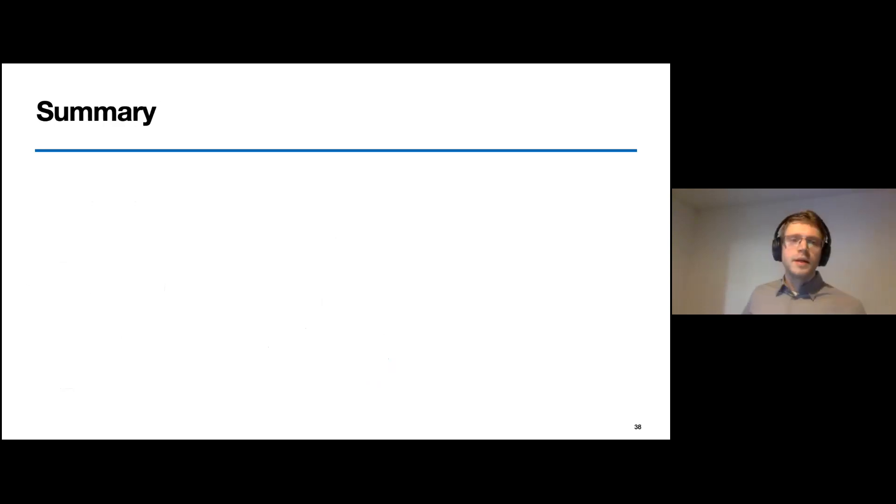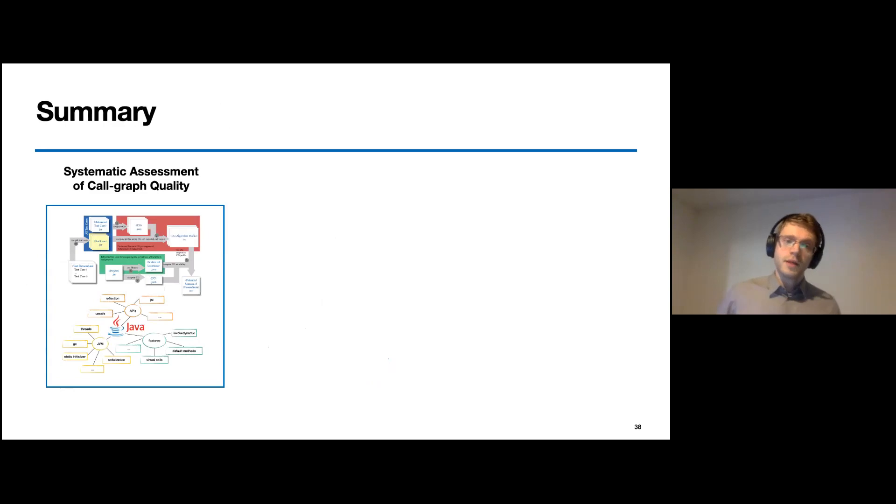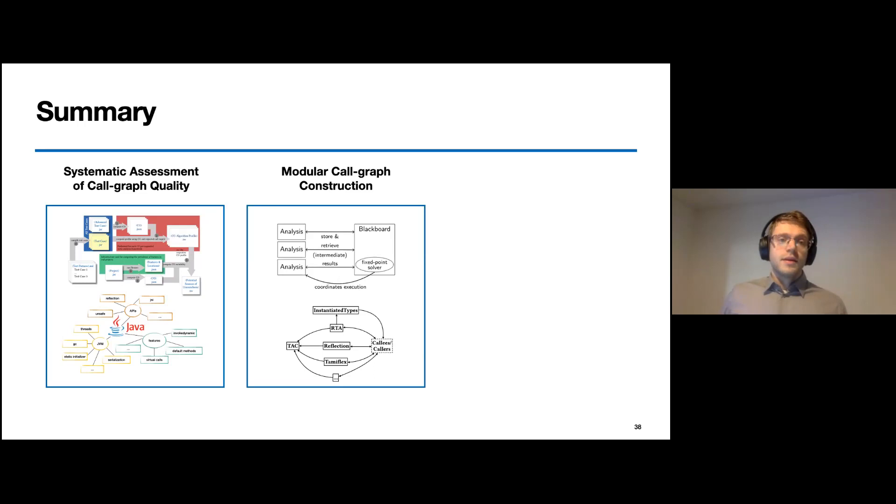Let me summarize my talk. In the first part, we learned how to systematically assess the quality of call graph algorithms, and we learned that, on average, only 50% of the relevant language features and APIs are supported by state-of-the-art tools. Then, we used this to present the first imperative approach to construct call graphs modularly, insofar that we now have a system where we can systematically trade off between precision, scalability, and soundiness, according to the use case.